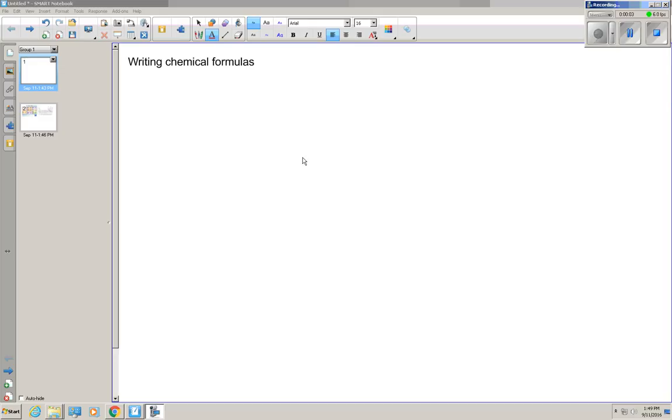Hey everybody, I want to make a short video on how to write chemical formulas. The past couple days in class we've spent a lot of time talking about how atoms in the periodic table are neutral. And we were very careful to say that a neutral atom is something that has an equal number of protons and electrons.